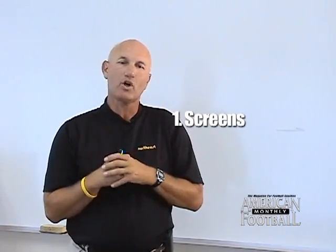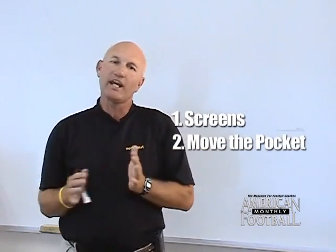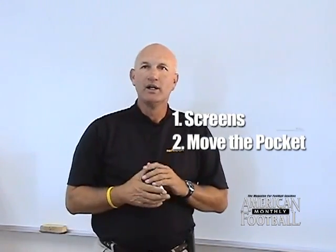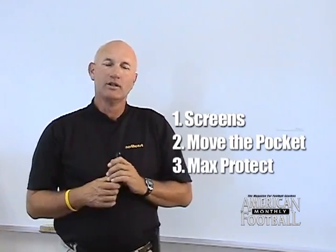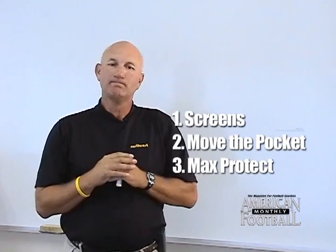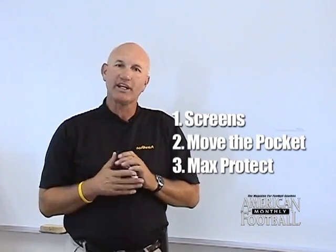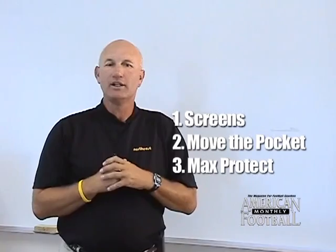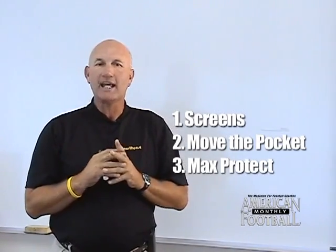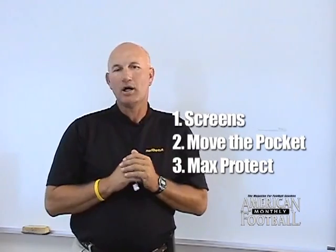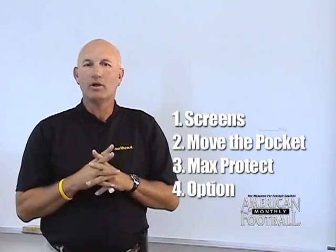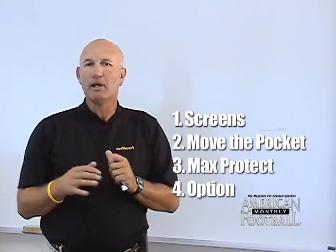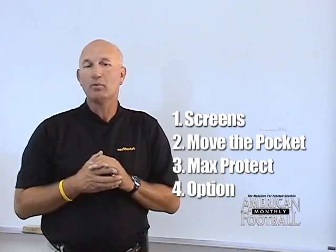Number two is moving the pocket — sprint protection, moving the pocket either left or right with our slide protection. Number three is max protect, which is seven-man protection. The defense usually brings five or six, so if you have seven-man protection and you set your protection, you can handle a blitz. The fourth type is option. We run two types of options: speed option and zone option, and depending on what the defense does, it depends on what type we run.